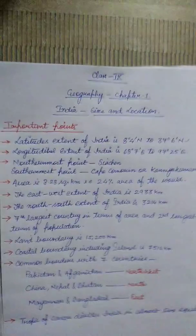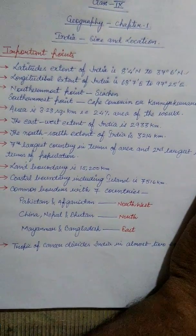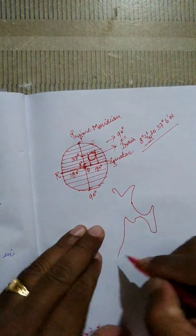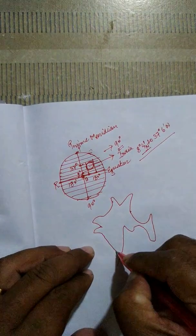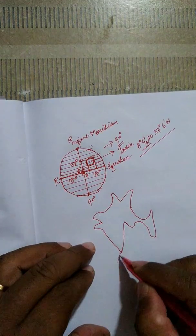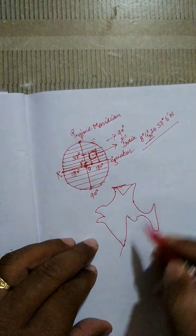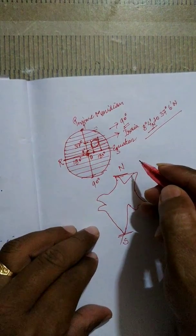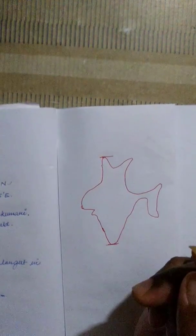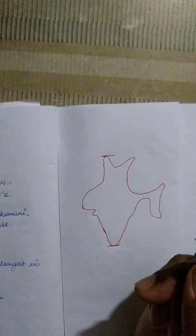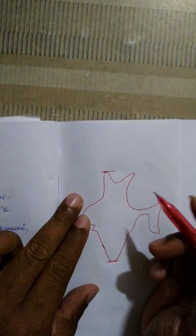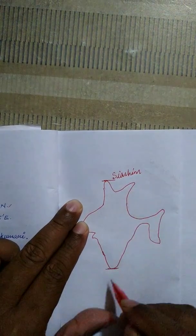Now, the northernmost point of India is Siachin and the southernmost point is Cape Comorin, also known as Kanyakumari. These are the northernmost and southernmost points of India.